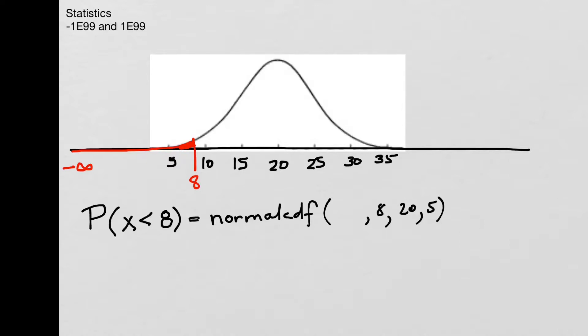So what we do instead is we put in a value that is very, very far to the left of our graph, and the value that we usually use is negative 1E99. And what this means is negative 1 times 10 to the 99th power.